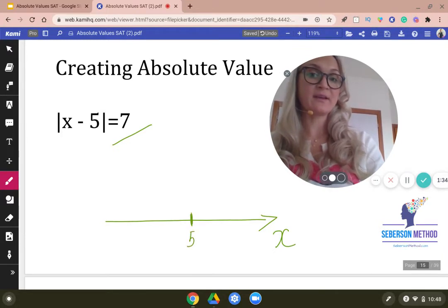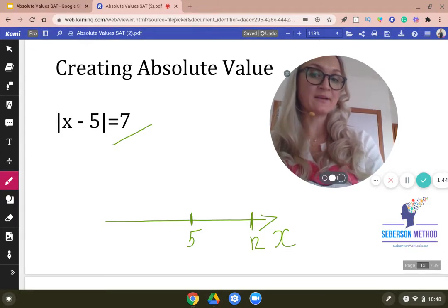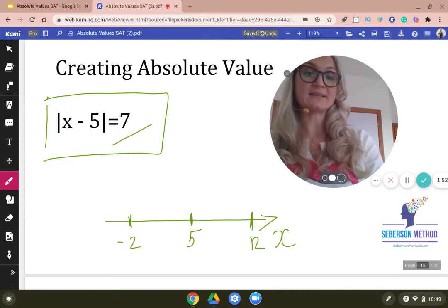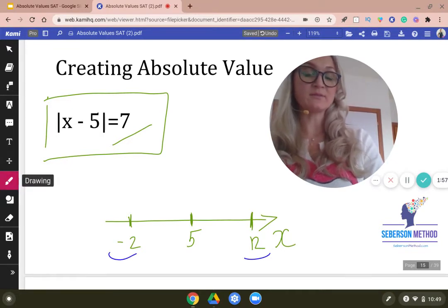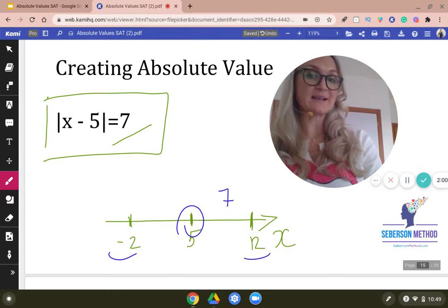And then we're going to go 7 units to the right, we're going to end up in 12, and then we're going to go 7 units to the left and we're going to end up at negative 2. So this is the scenario that this absolute value presents us: that there are two points on the graph, negative 2 and 12, that are equally distant from 5, and the distance is 7.